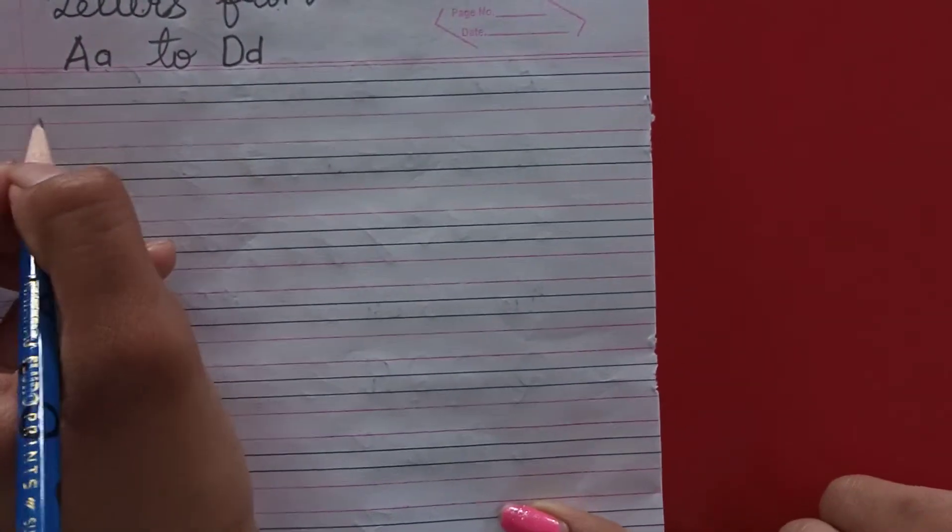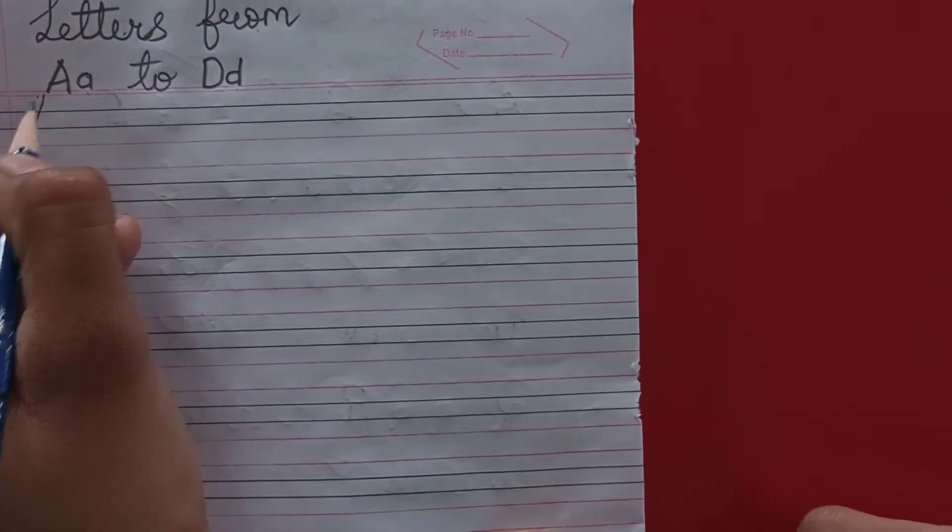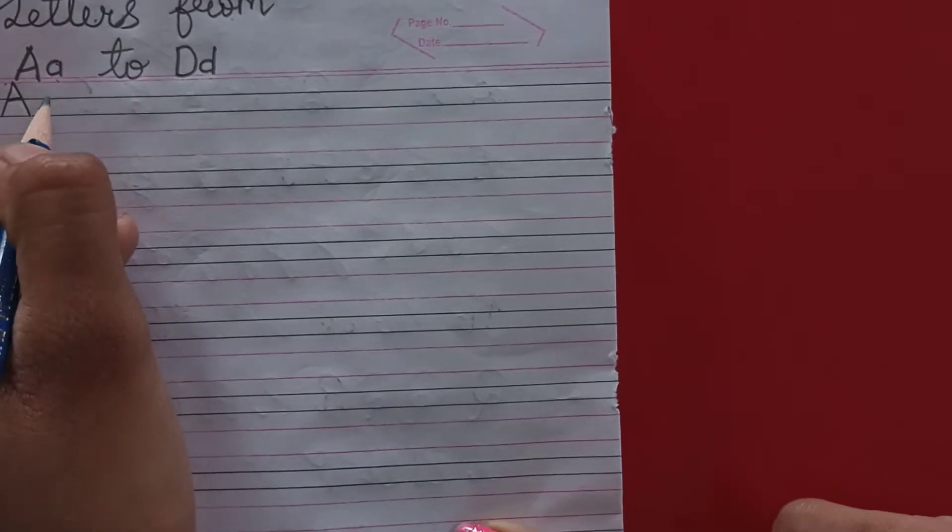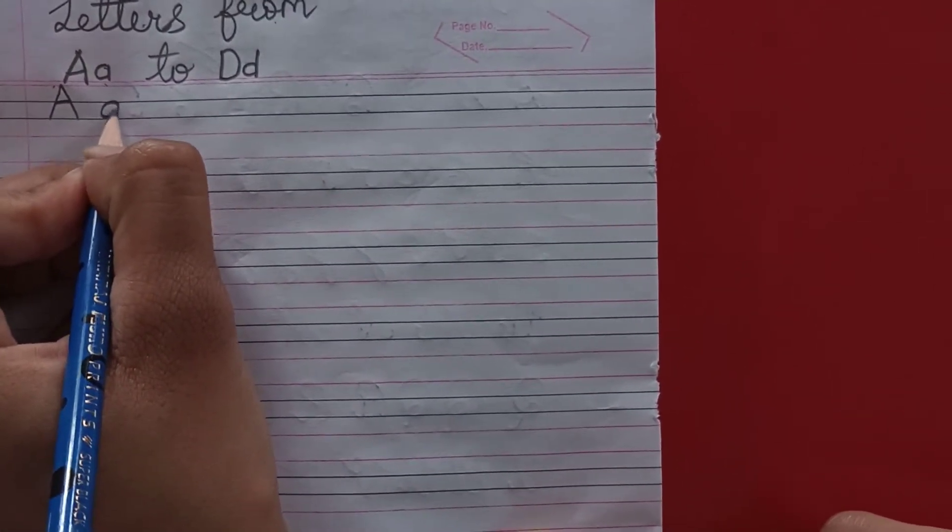Let's write capital A. A for apple. Now, we will write small a. A for airplane.